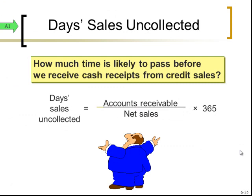The last topic in this section is a ratio: days sales uncollected. This measures how quickly we're able to collect all of our accounts receivable. We take the accounts receivable balance divided by net sales, multiplied by 365. This tells us, on average, how long it takes to collect those accounts. That takes us to the end of this section — hopefully this information has helped. Thank you for your time, and I'll talk to you in the next session.